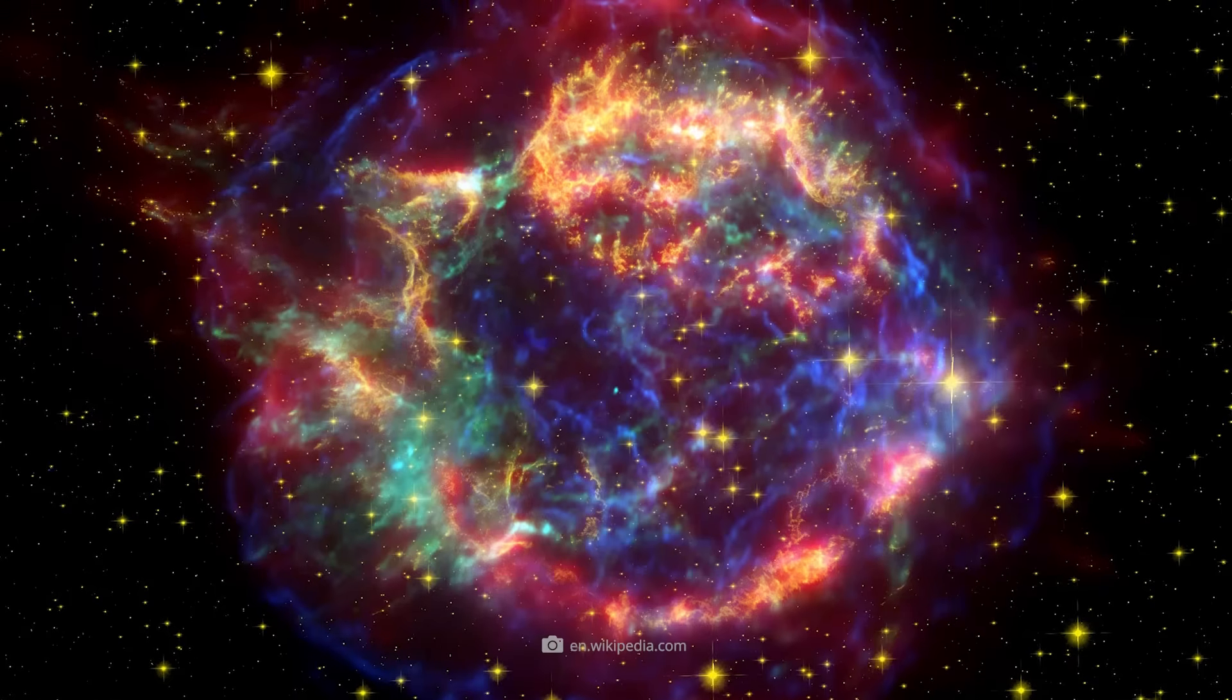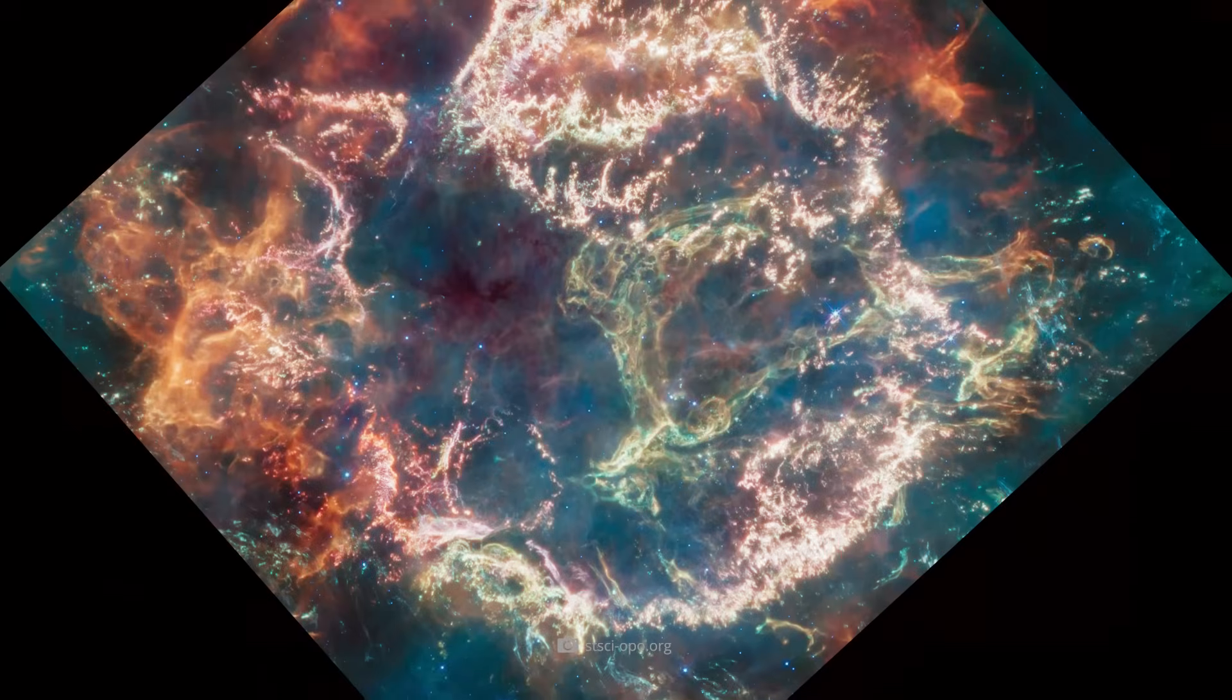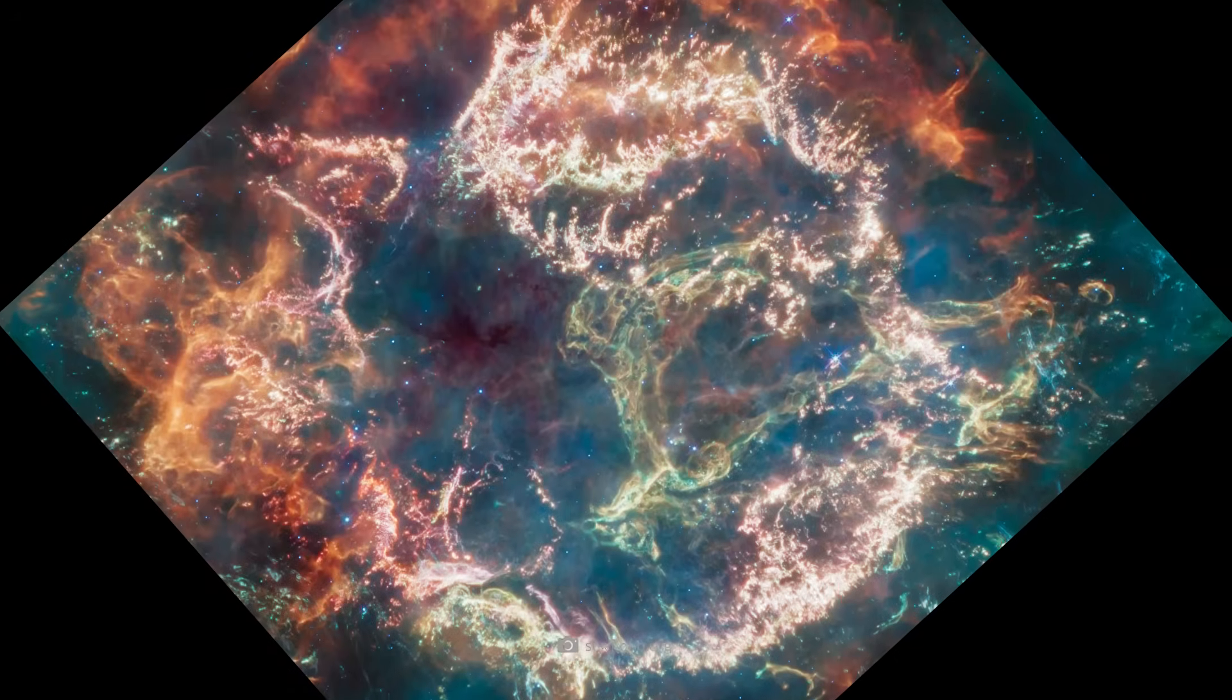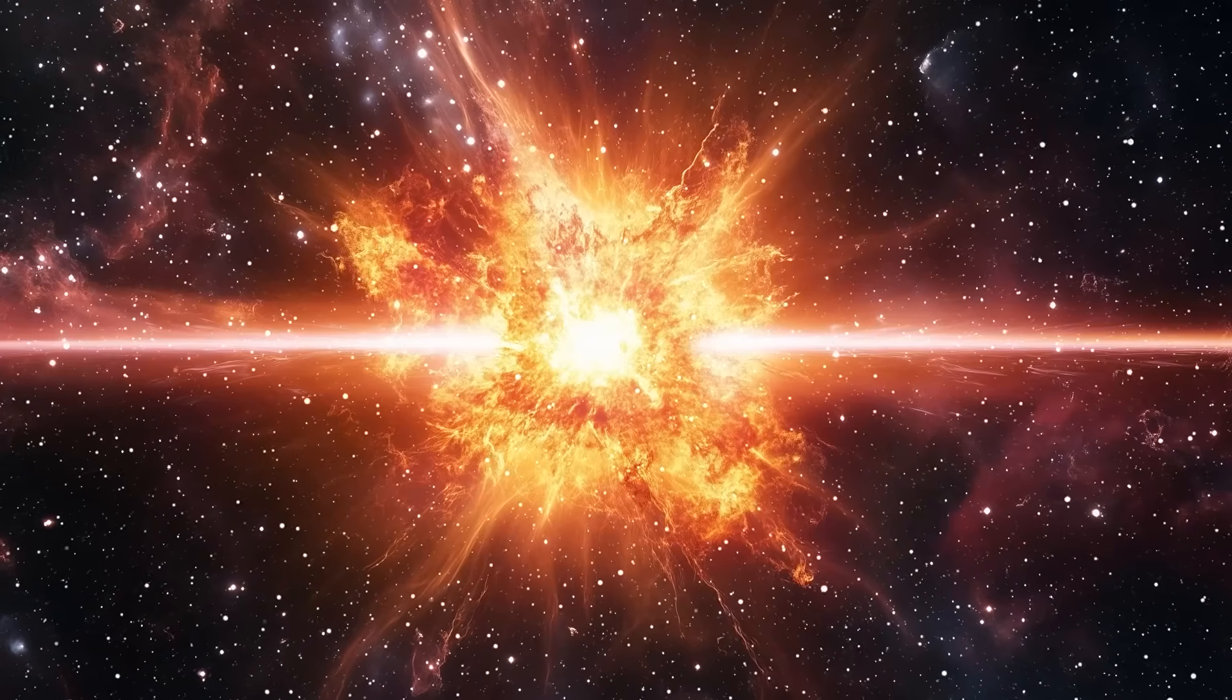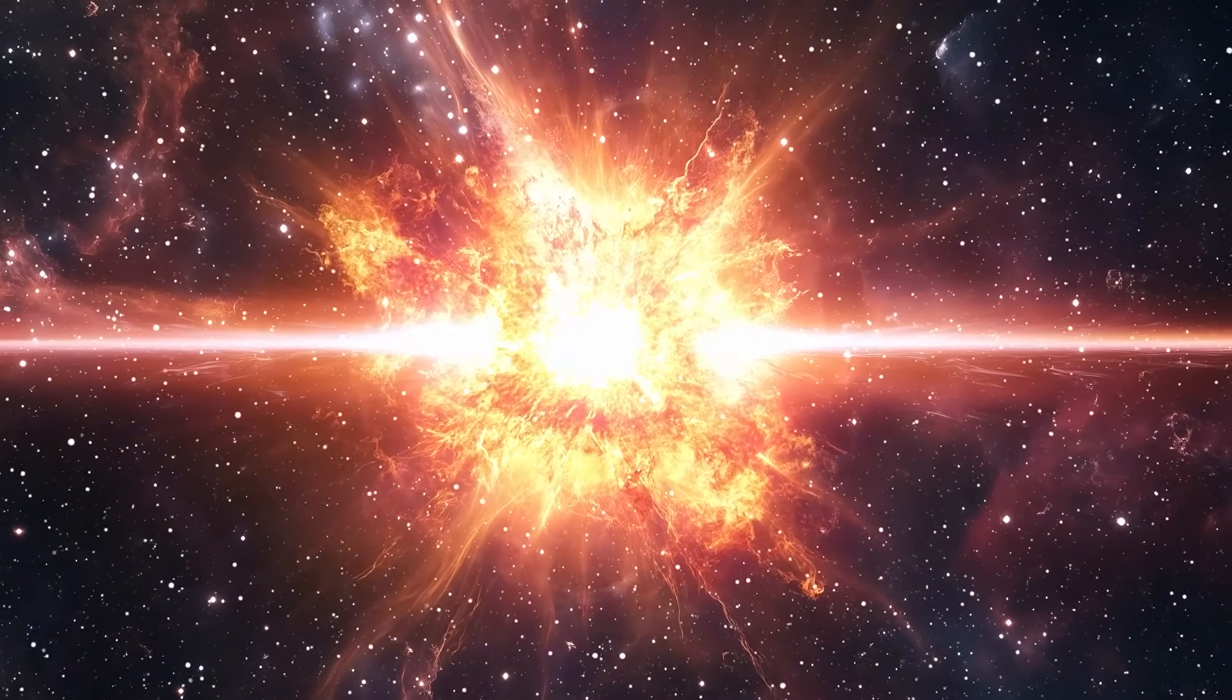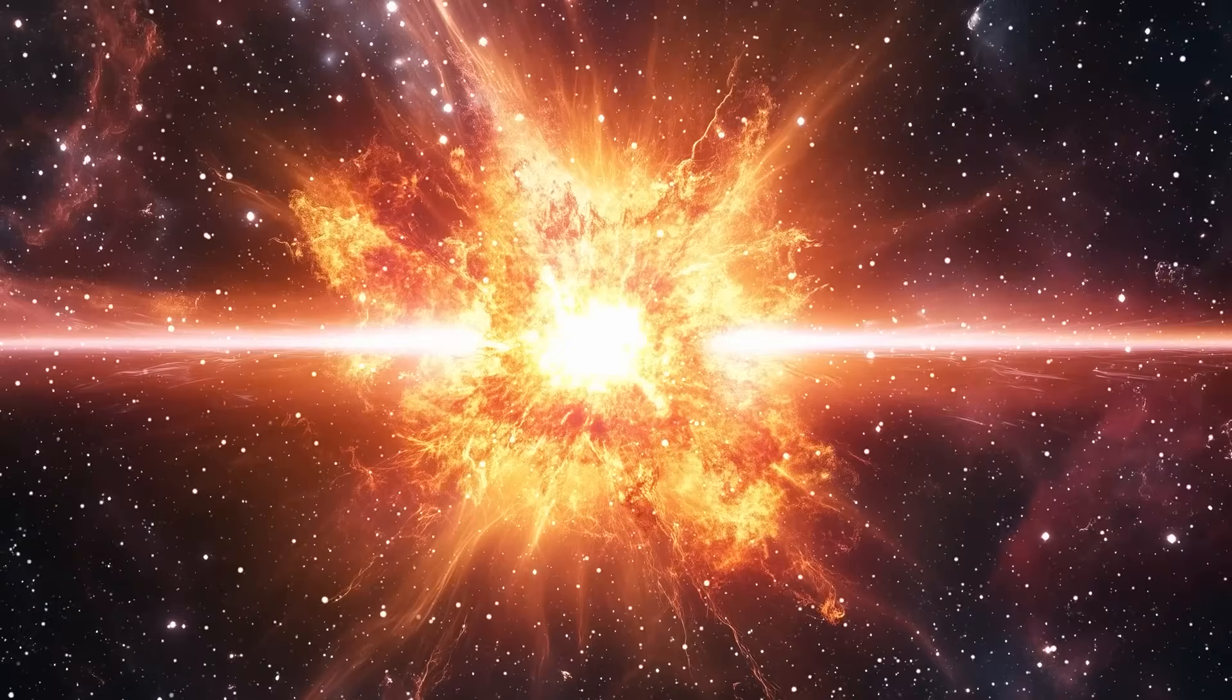After all, the light from the supernova continues to illuminate the surrounding gas and dust layers to this day. But the most remarkable feature of the Webb images is the so-called light echo. This phenomenon occurs when the light from a supernova explosion encounters and reflects off the surrounding interstellar medium.